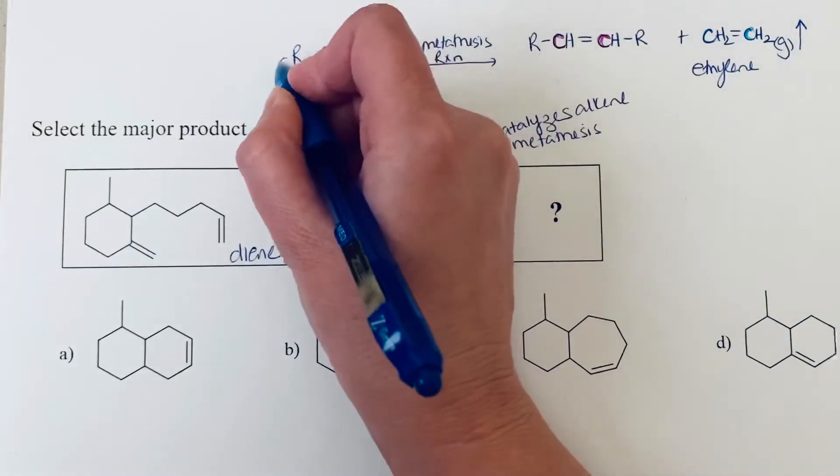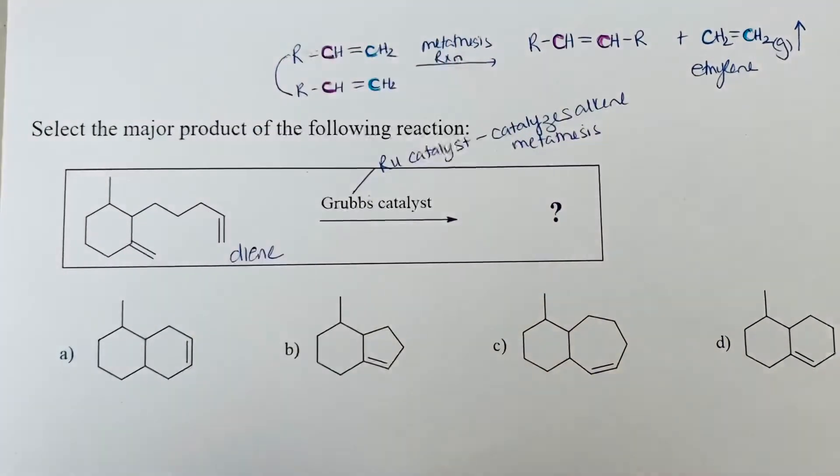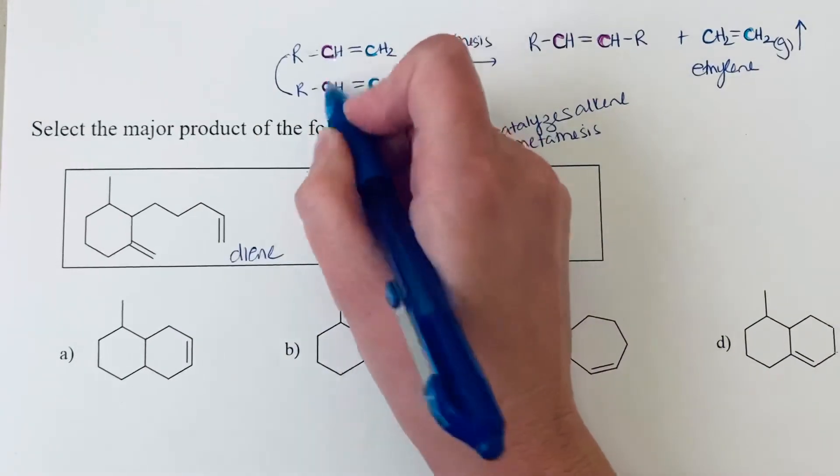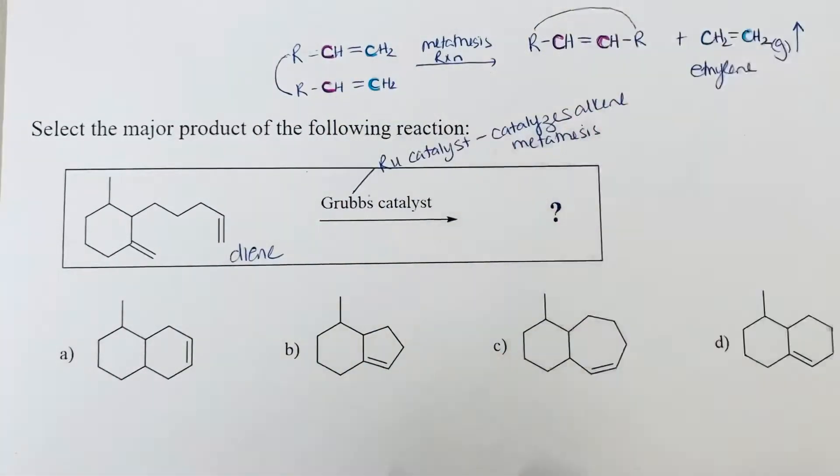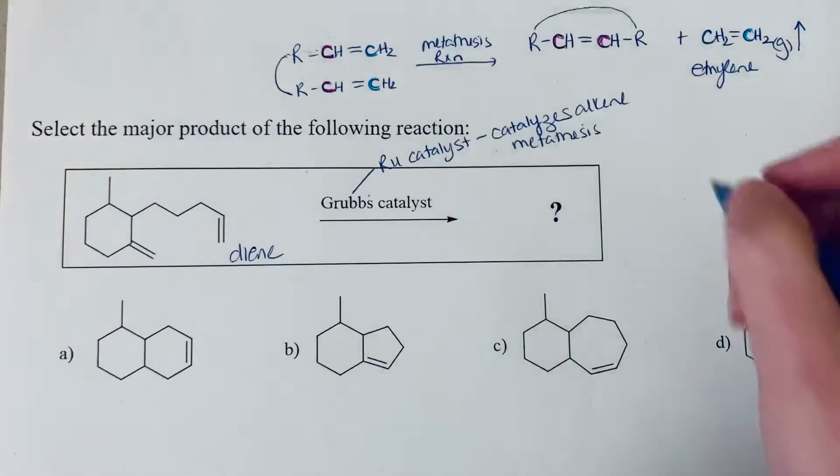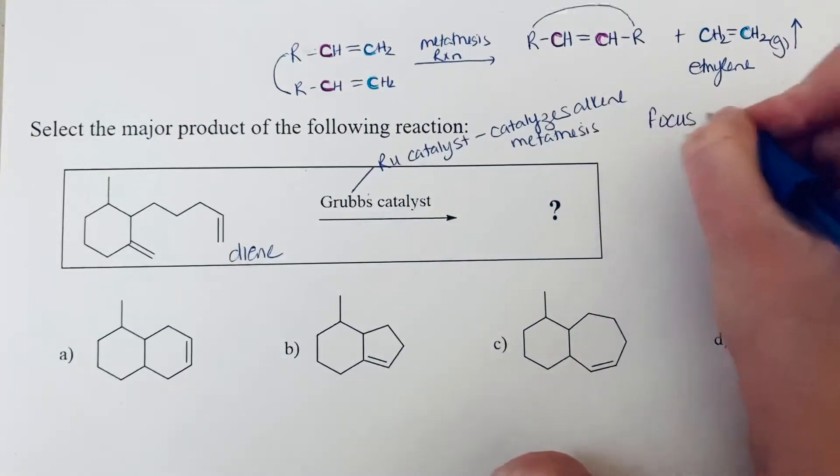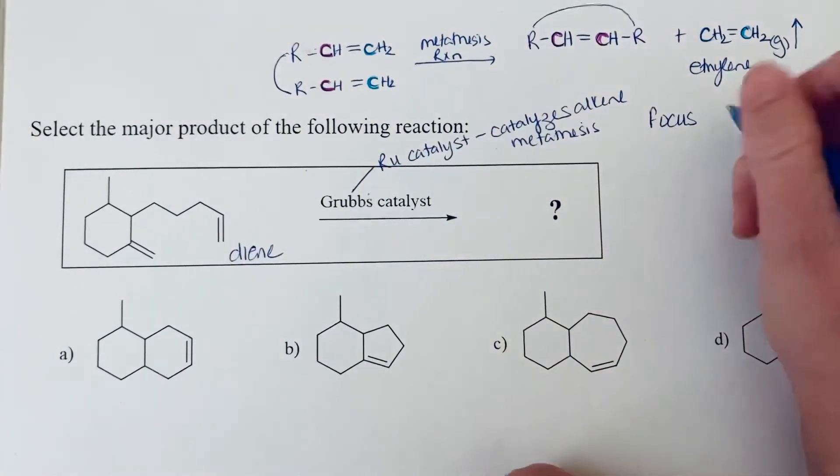So we will only focus on ring closing metathesis. So in that ring closing metathesis, we would say that these two R groups are attached together. So when we bring these two groups in, we've actually formed a ring. So we will focus only on ring closing metathesis for this class.